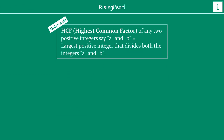Now, what is HCF? HCF is also known as Highest Common Factor. The HCF of any two given positive integers, say A and B, is equal to the largest positive integer that divides both the integers A and B.